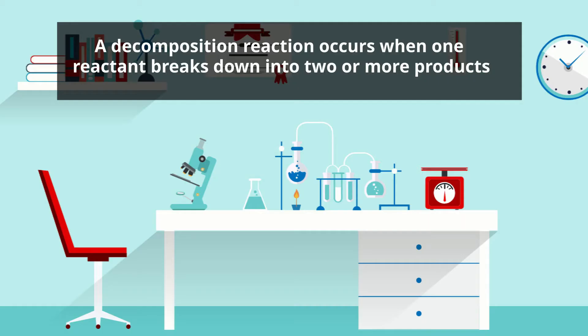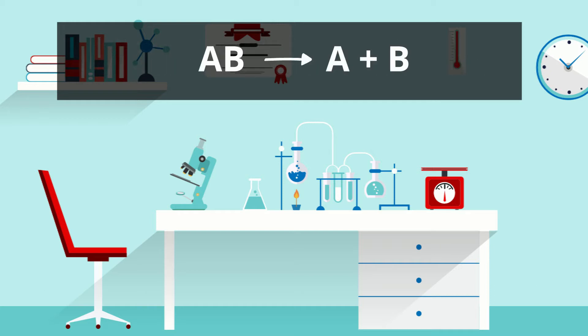A decomposition reaction occurs when one reactant breaks down into two or more products. Here's the equation: AB yields A plus B. In this equation, AB represents the reactant that begins the reaction, and A and B represent the products. Again, the arrow shows the direction.